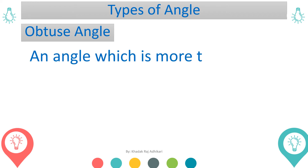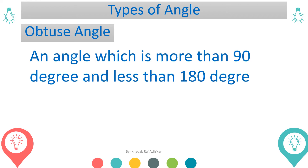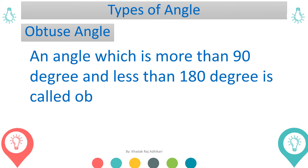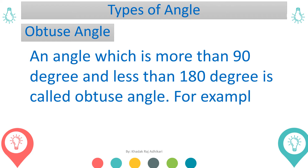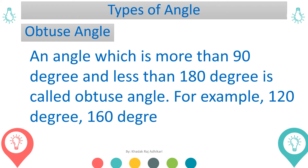An angle which is more than 90 degrees and less than 180 degrees is called an obtuse angle. For example: 120 degrees, 160 degrees, 145 degrees, and so on.